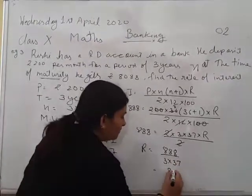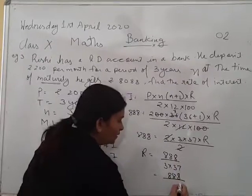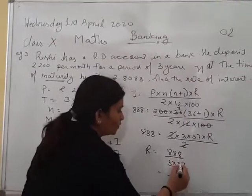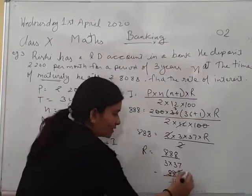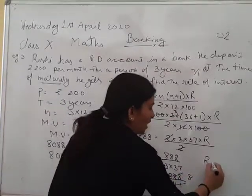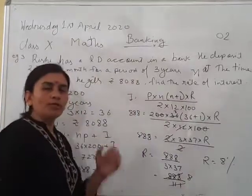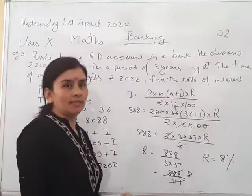Now the R is 888 upon 3 into 37. Now simplify this one. It will be divided by 3, so this will get cancelled. So the R is coming 8%. So in this way we will take out the rate.